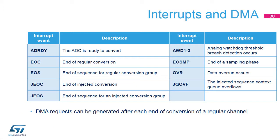Each ADC can generate nine different interrupts: ADC ready, end of conversion, end of sequence, end of injected conversion, end of injected sequence, analog watchdog, end of sampling, data overrun, and overflow of the injected sequence context queue. DMA requests can be generated at each end of conversion when the ADC output data is ready.